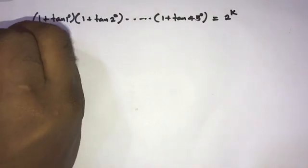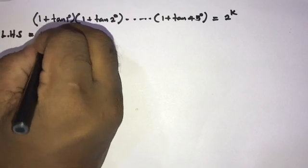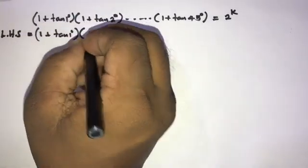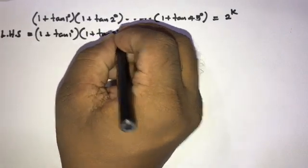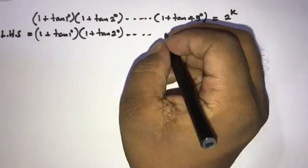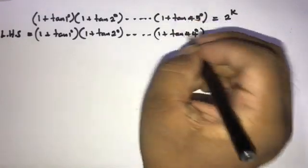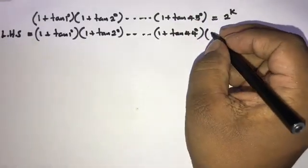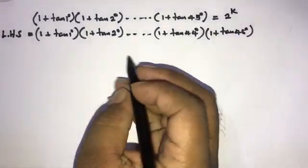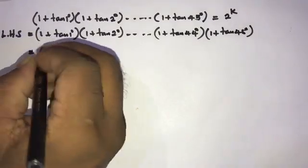Let's start with the left-hand side. We can write the left-hand side as (1 + tan1)(1 + tan2)... and this continues up to the previous term (1 + tan44) and the last term (1 + tan45 degrees).